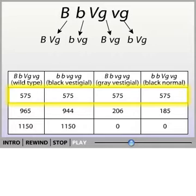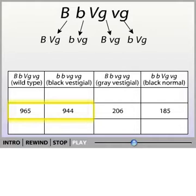However, Morgan observed something different in his fruit flies. The alleles for body color and wing shape seem to be inherited together most of the time. These results made sense when Morgan realized that the two genes are on the same chromosome — that is, they are linked.